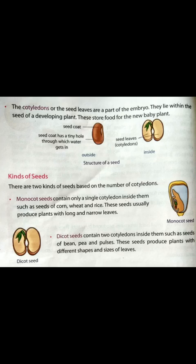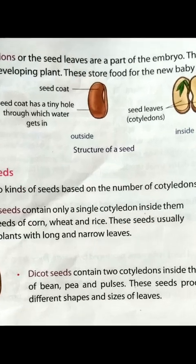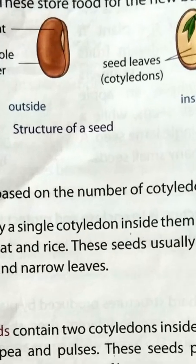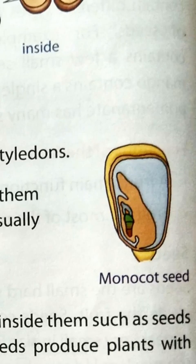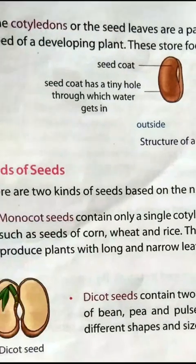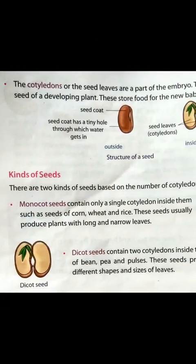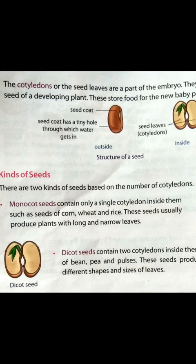There are two kinds of seeds based on the number of cotyledons: monocot seed and dicot seed. Monocot seeds contain only a single cotyledon inside them.